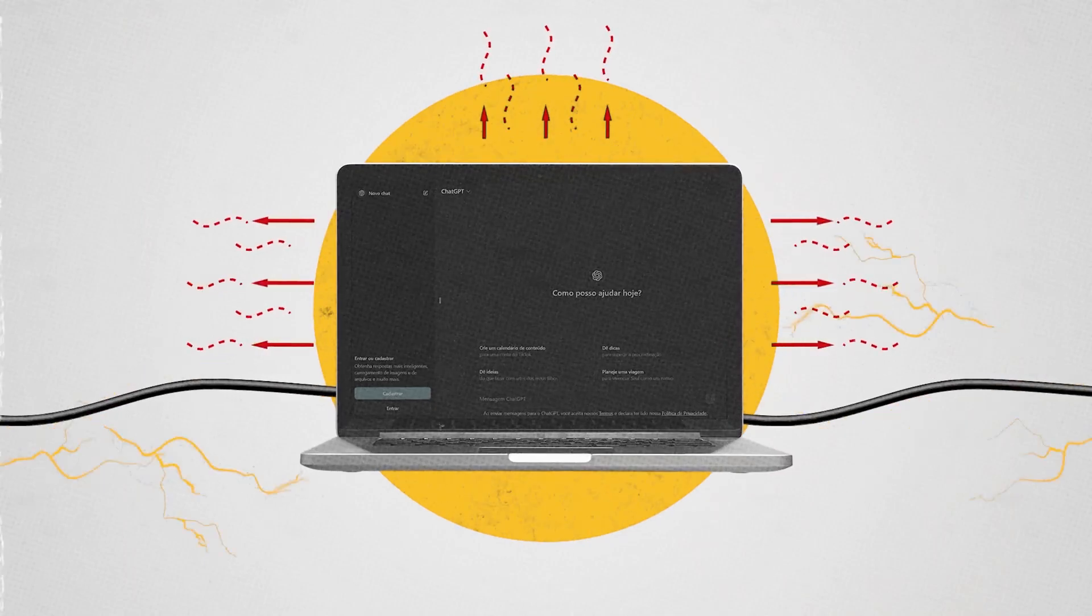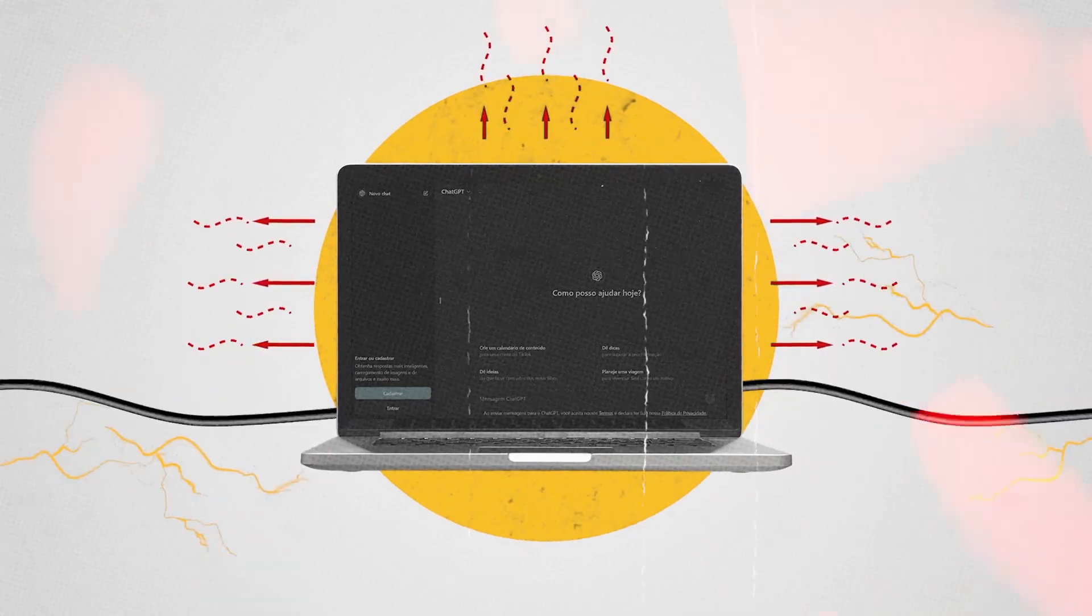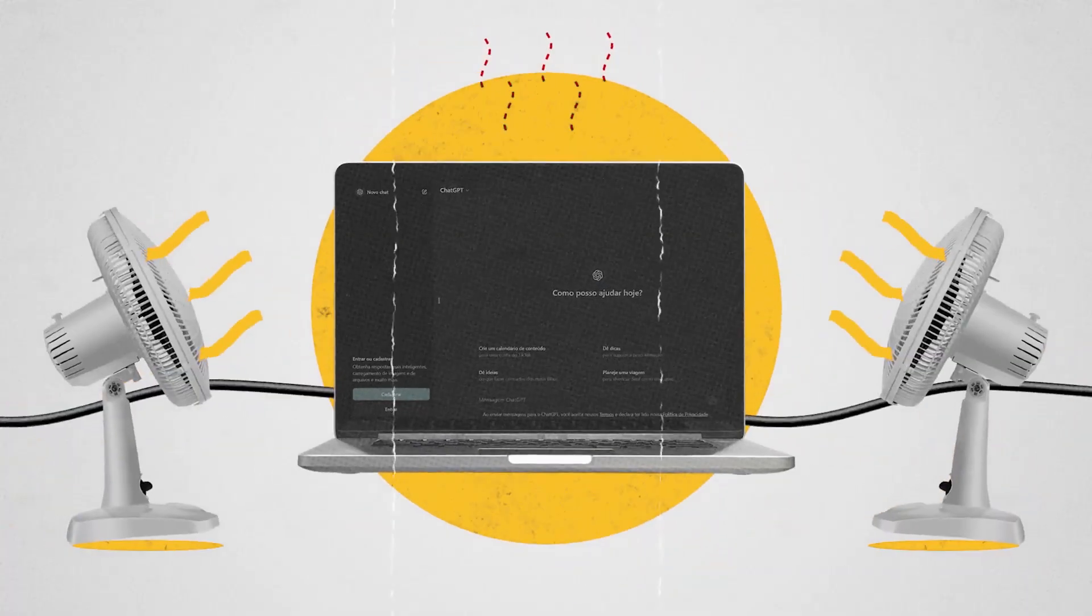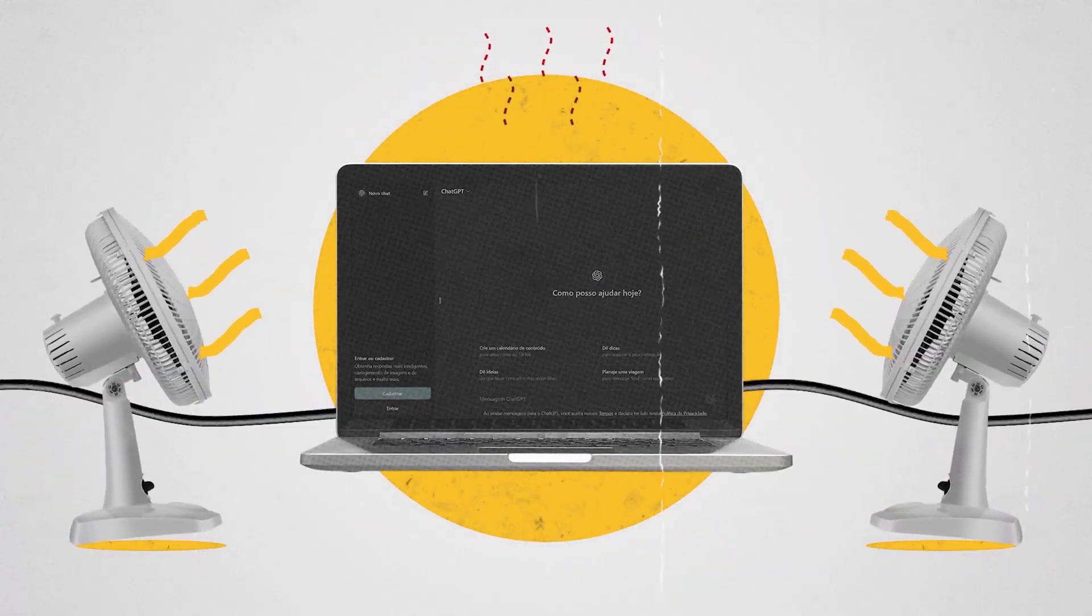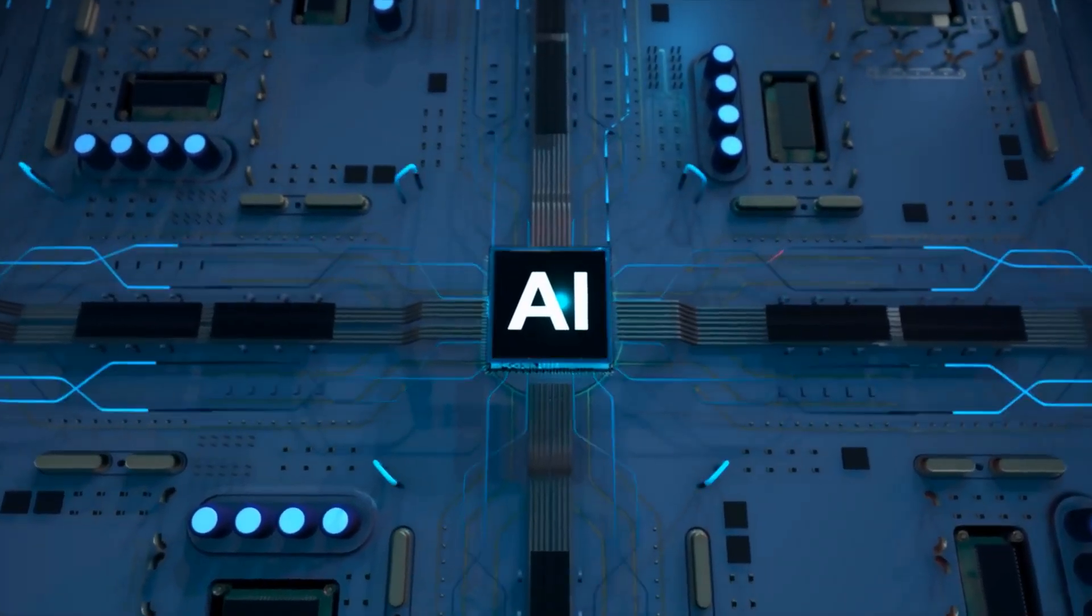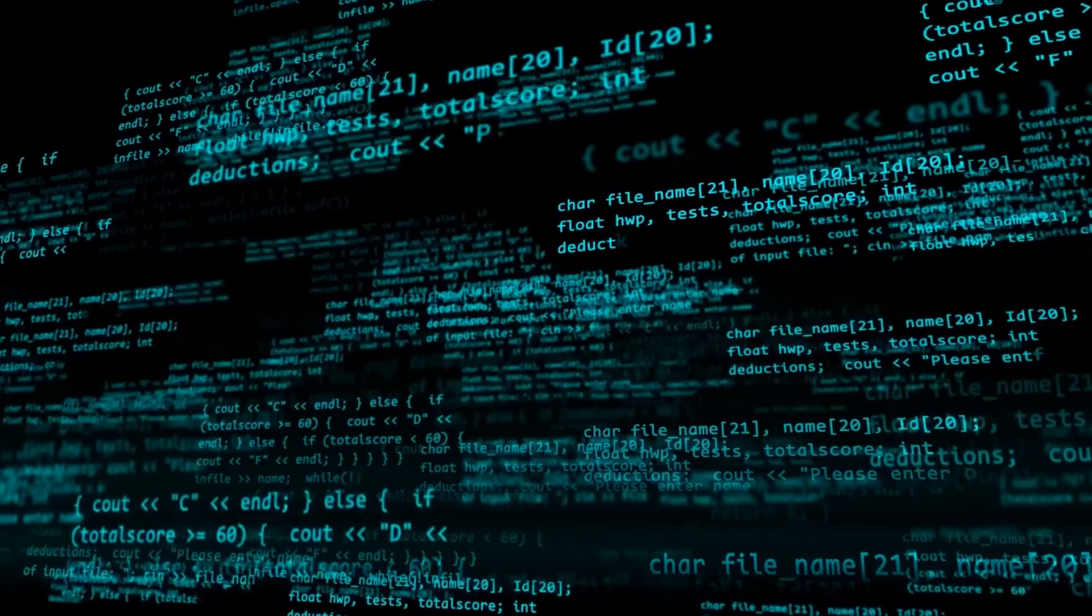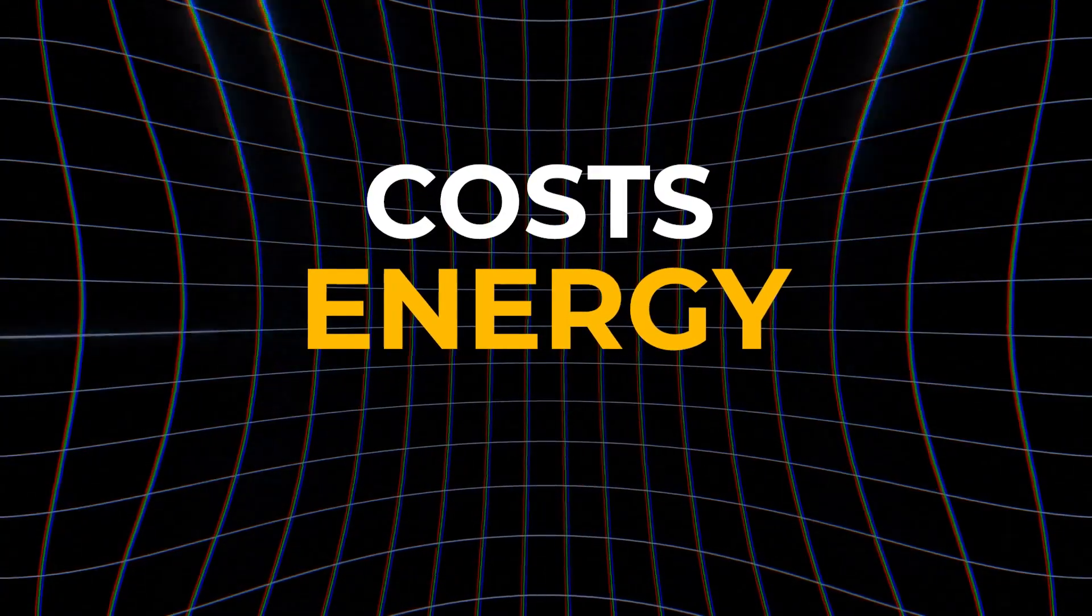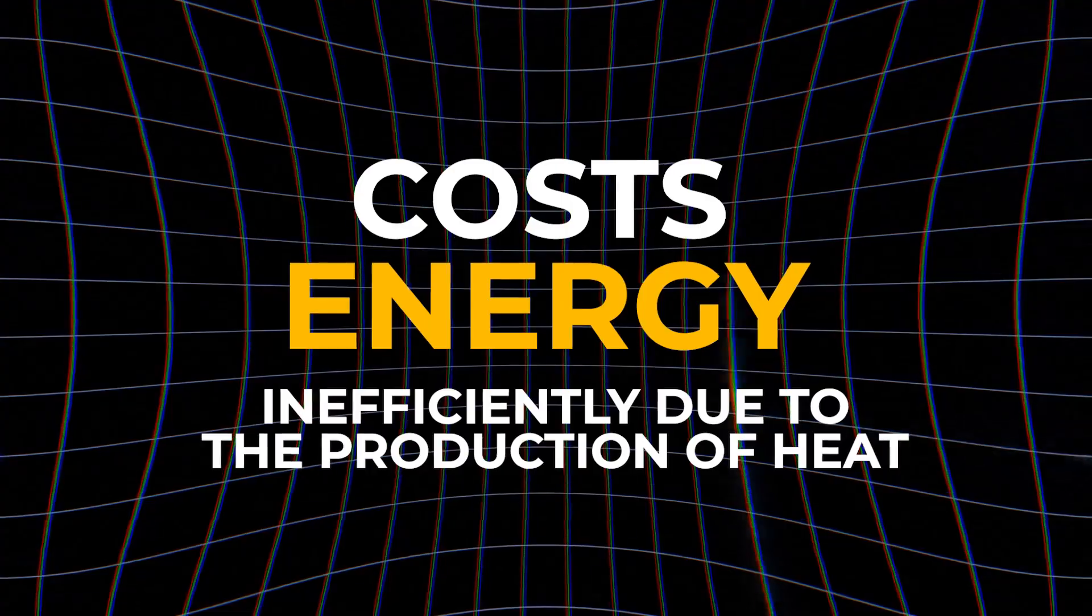Computer chips use electricity running through conductors, but this process generates heat. And a good portion of the energy in computers is wasted as heat. Therefore, electronic computers need to be actively cooled when they are operating. Increasing the capacity of artificial intelligence means exponentially increasing the available computational power and the amount of available data, which costs energy. And it costs energy inefficiently due to the production of heat.